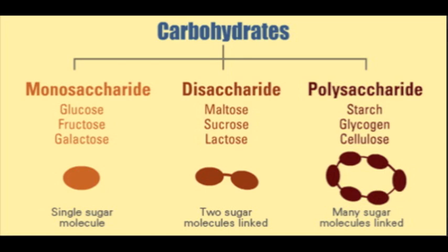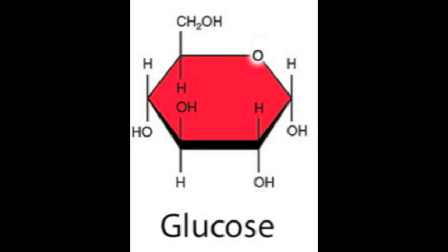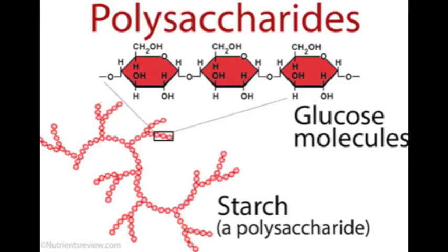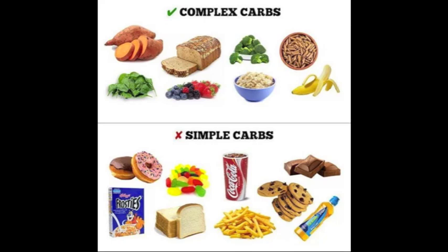Monosaccharide, disaccharide, polysaccharide — what does this mean? One, two, many molecules combined chemically. Simple carbs are in fruit and candy; complex carbs are in pasta and veggies.